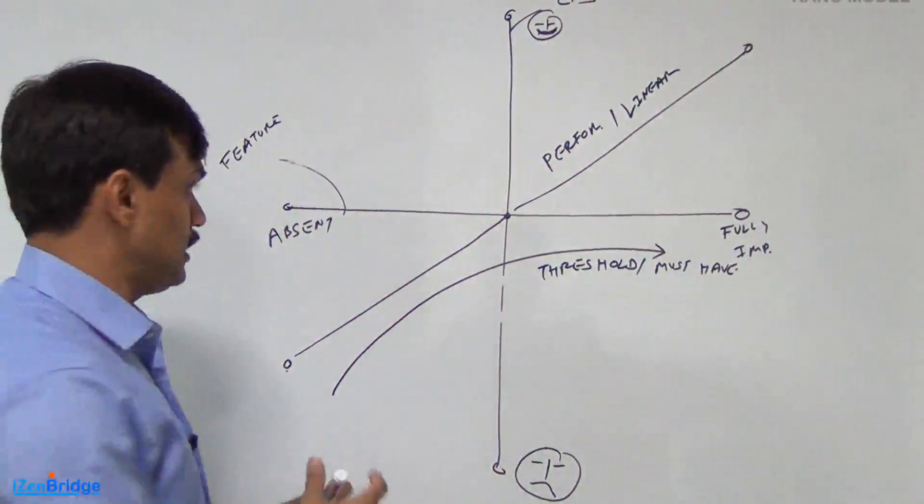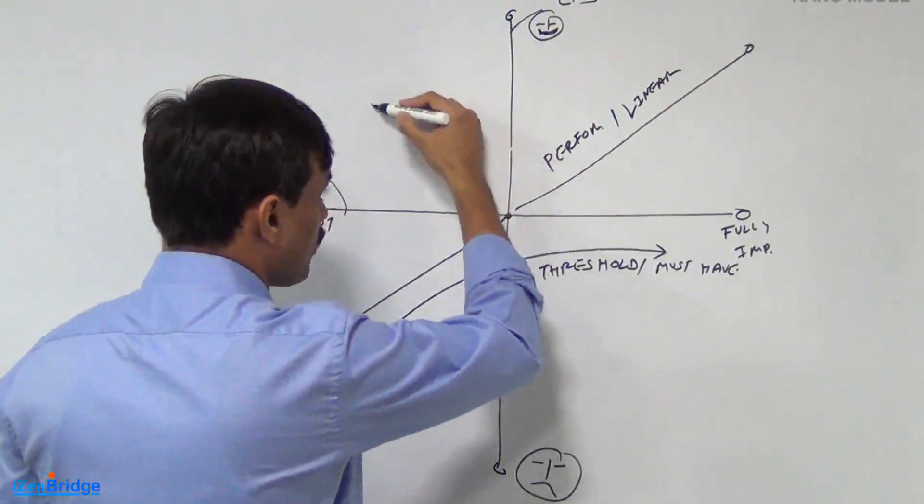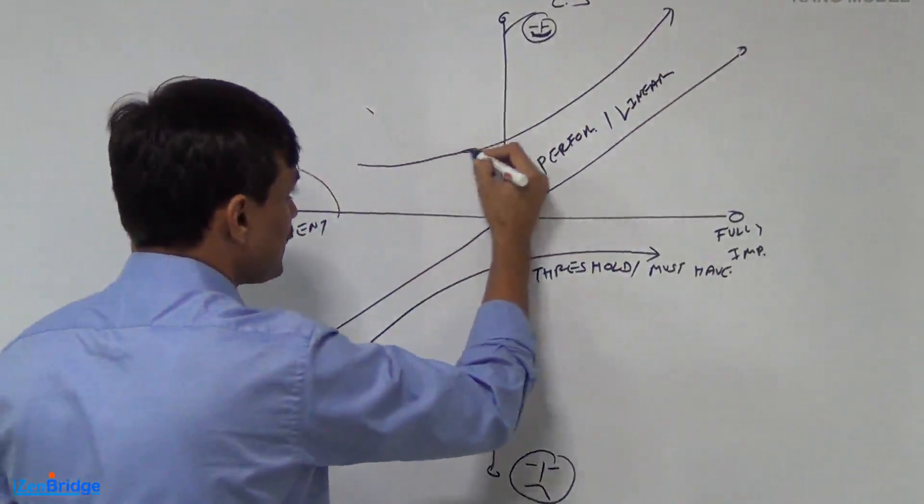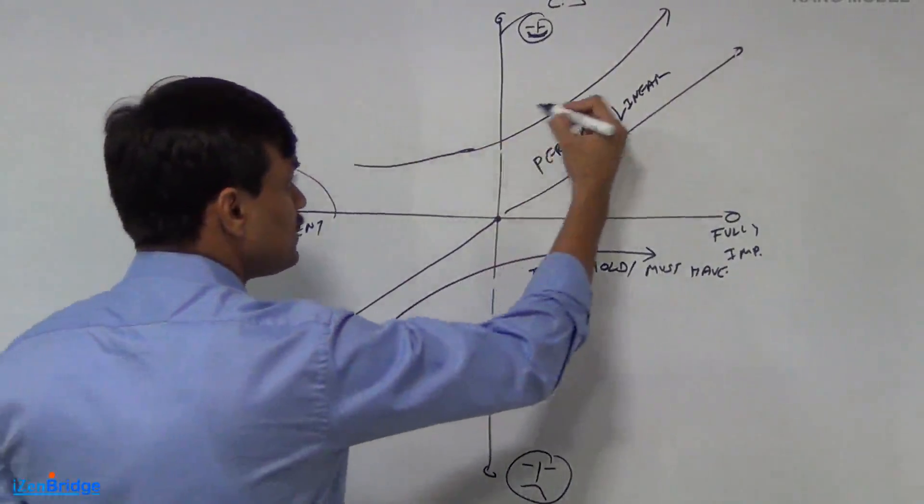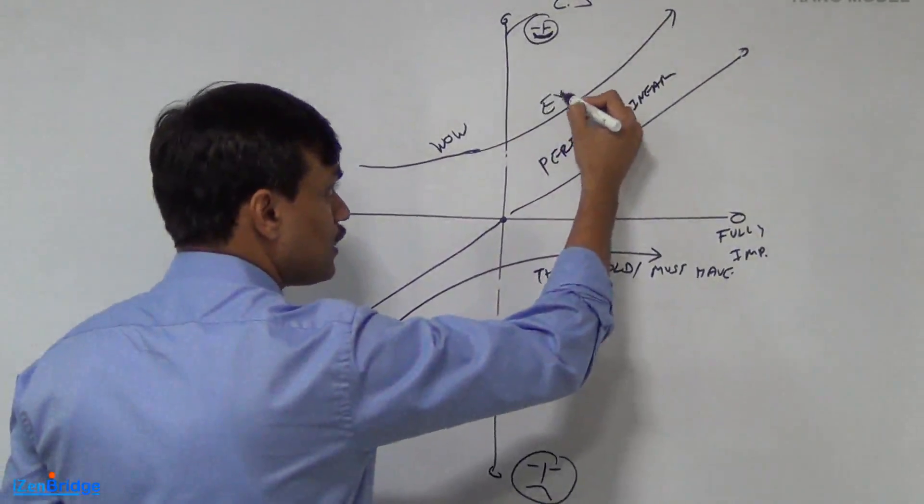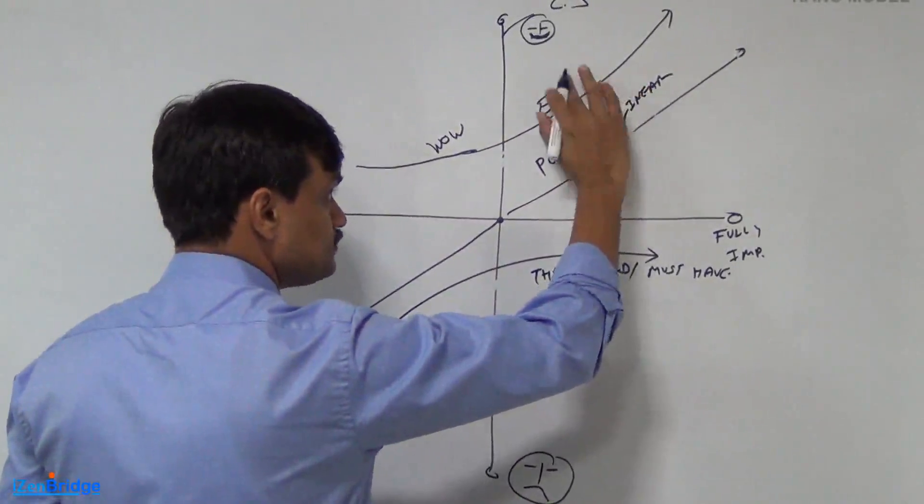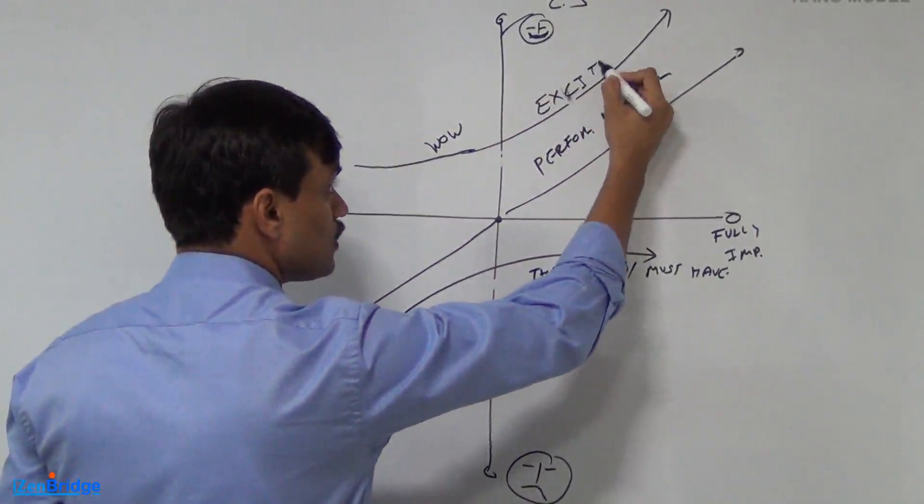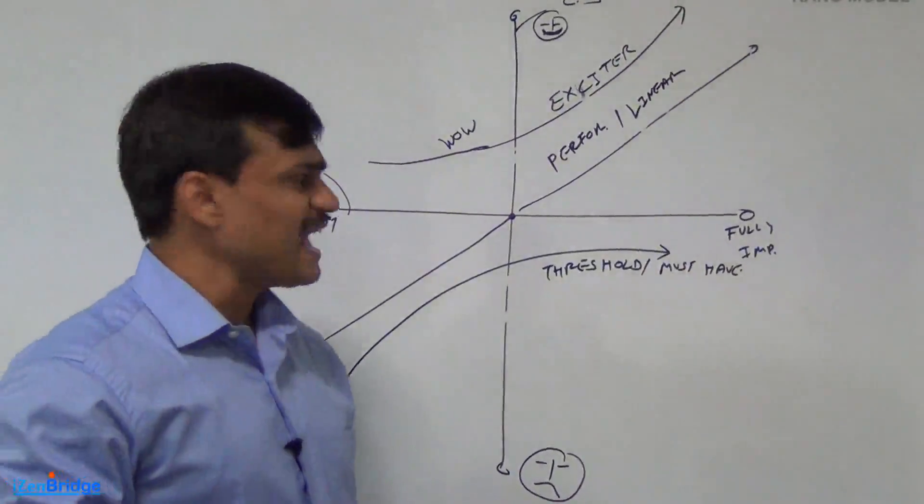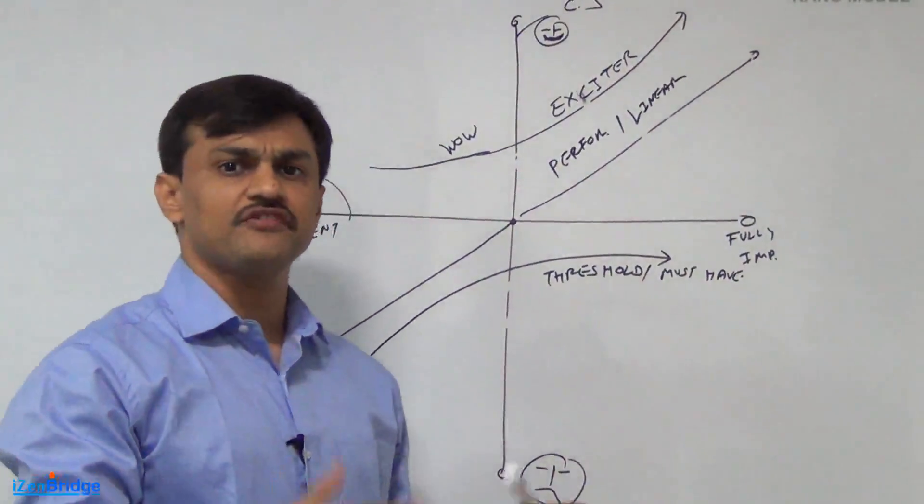Then there is a third category, which are wow features. These features are falling somewhere here. So rather than this curve, it is something like this. So as we implement them, customer will feel wow about them. They are exciters. So they excite the customers. They are like unique selling propositions, differentiators.